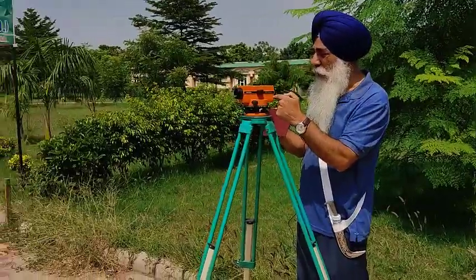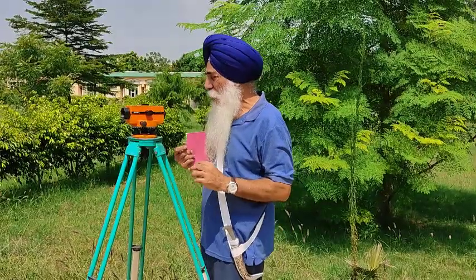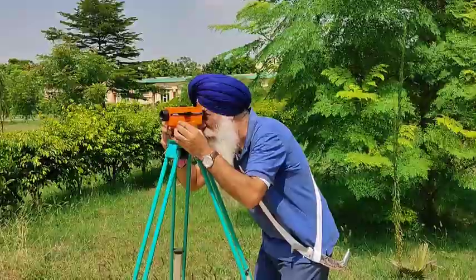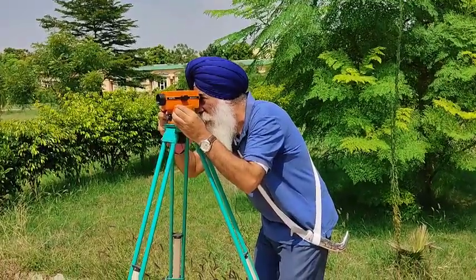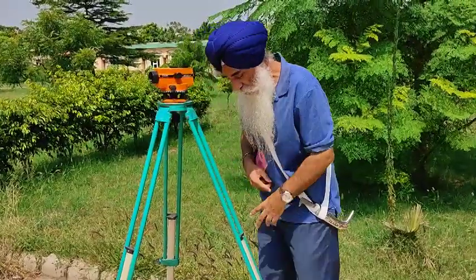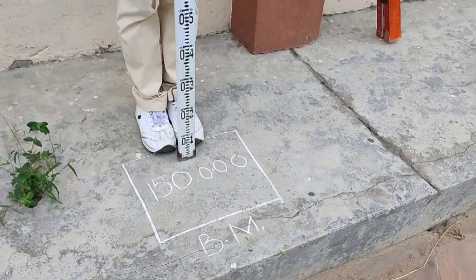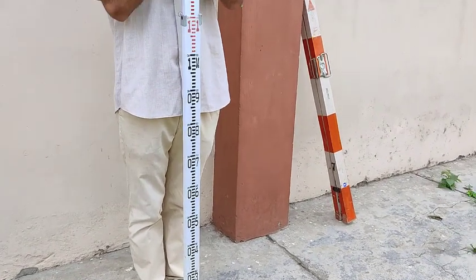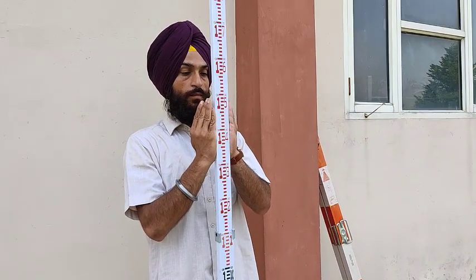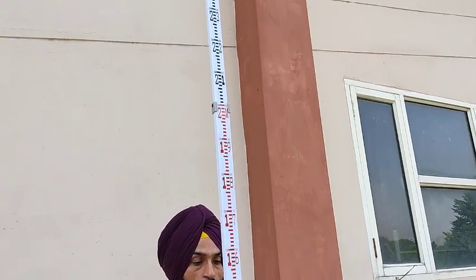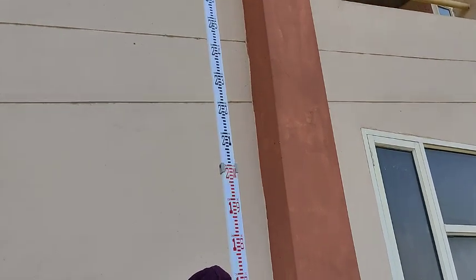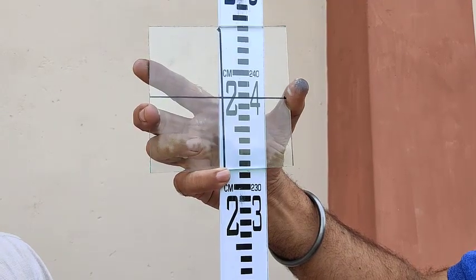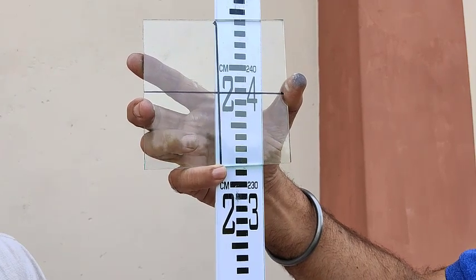The levelling staff is there and the instrument is here. After the temporary adjustments, levelling is set. The first reading taken at the benchmark — whose value we assumed to be 150.00 meters — comes to be 2.375. This is the first reading of the setting, or we can say it is the backside reading. It is 2.375.